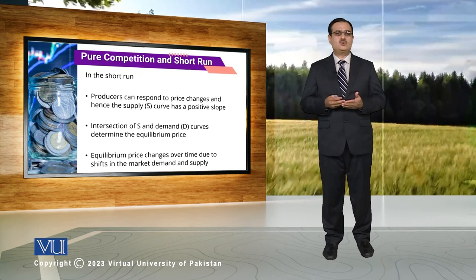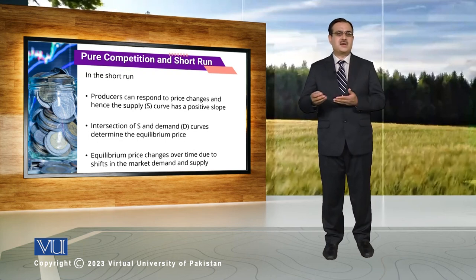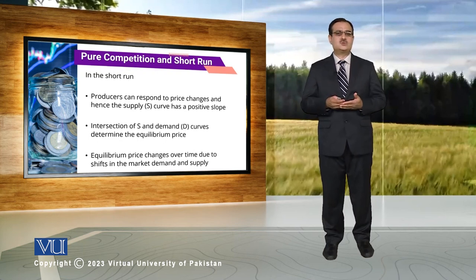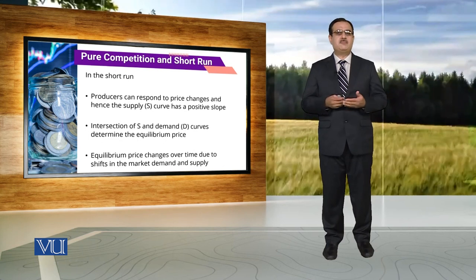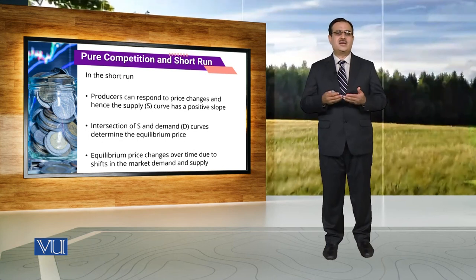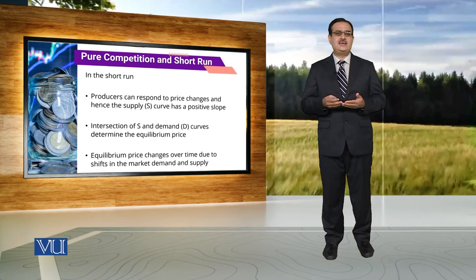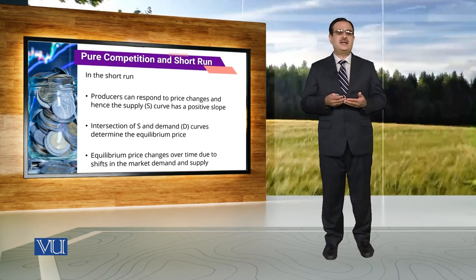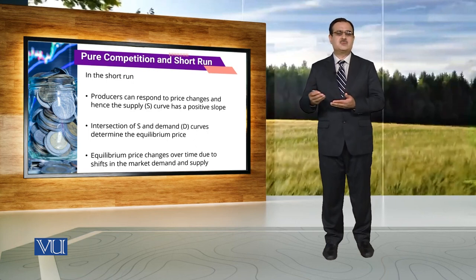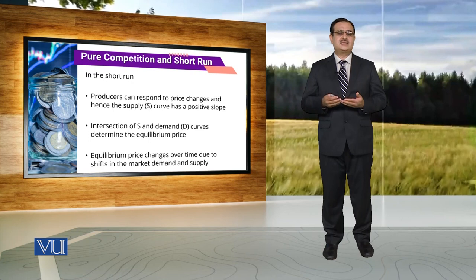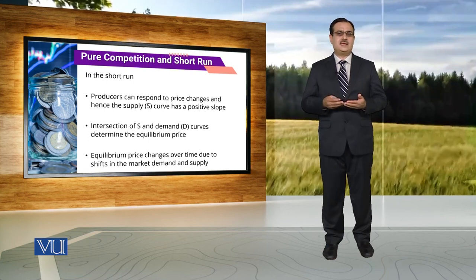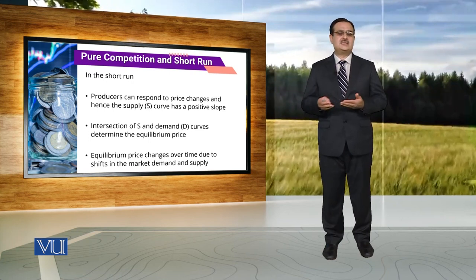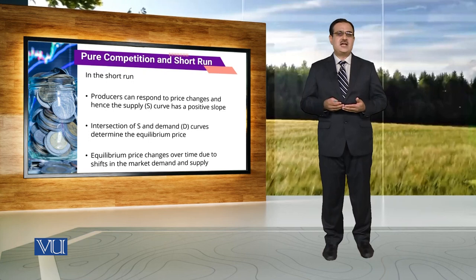जब आप entry and exit की बात करते हो तो इस market का characteristic होता है कि there is free entry and exit. In purely competitive market, हमारी assumption यह है कि entry and exit involves some cost but that cost is minimum. हम यह भी कहते हैं कि in this market structure, buyers and sellers have perfect information.